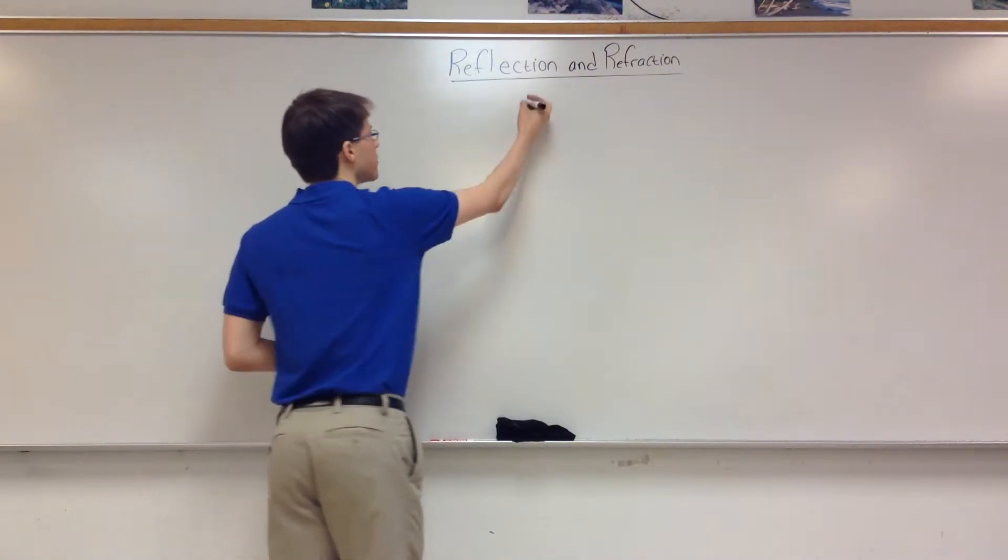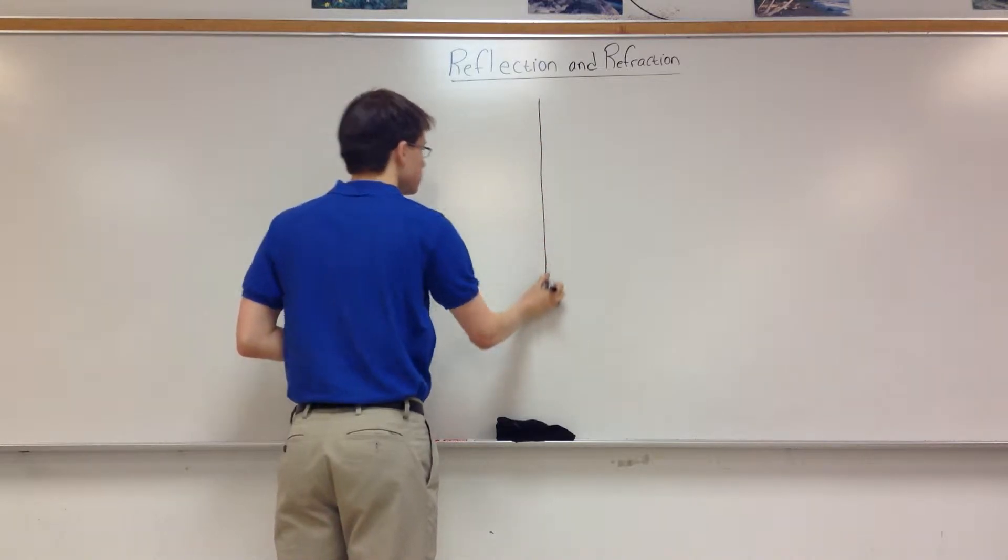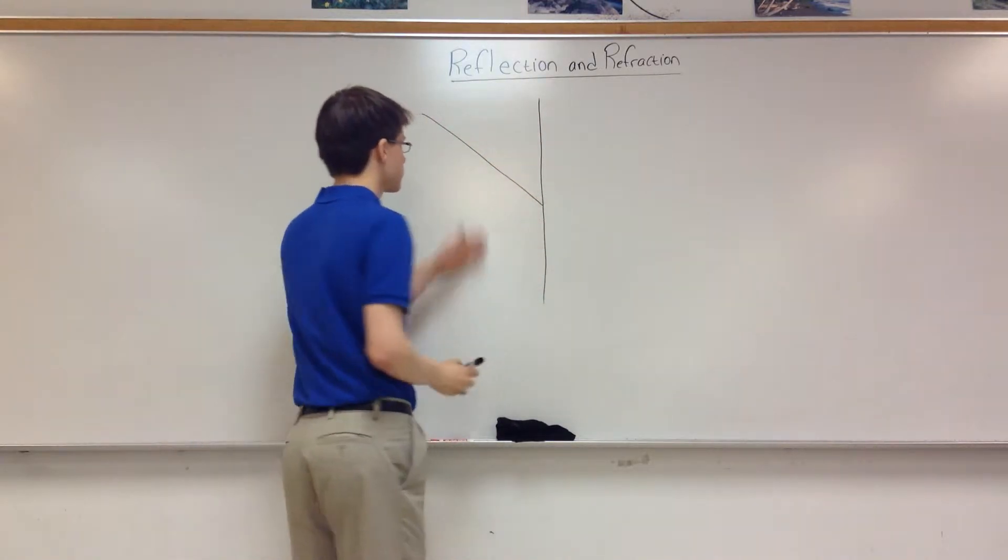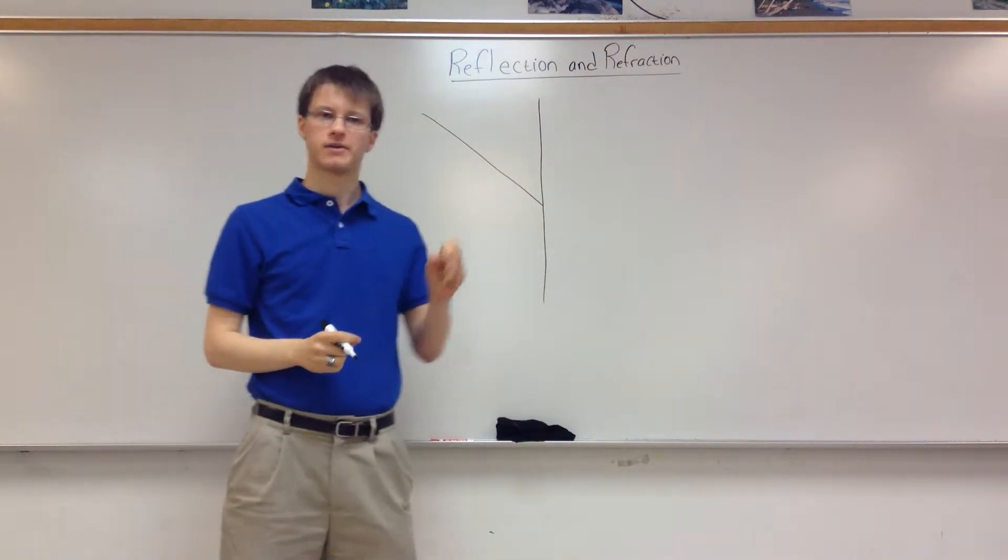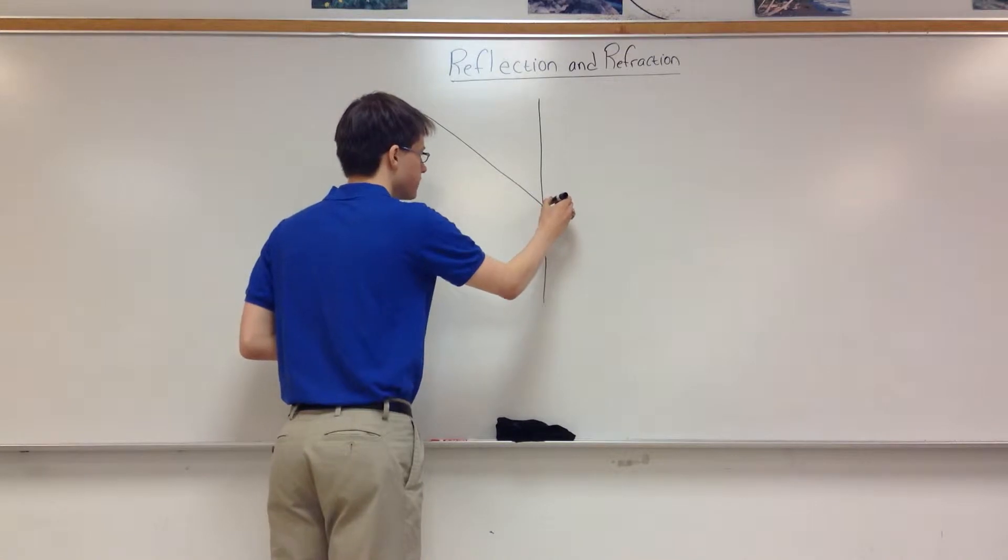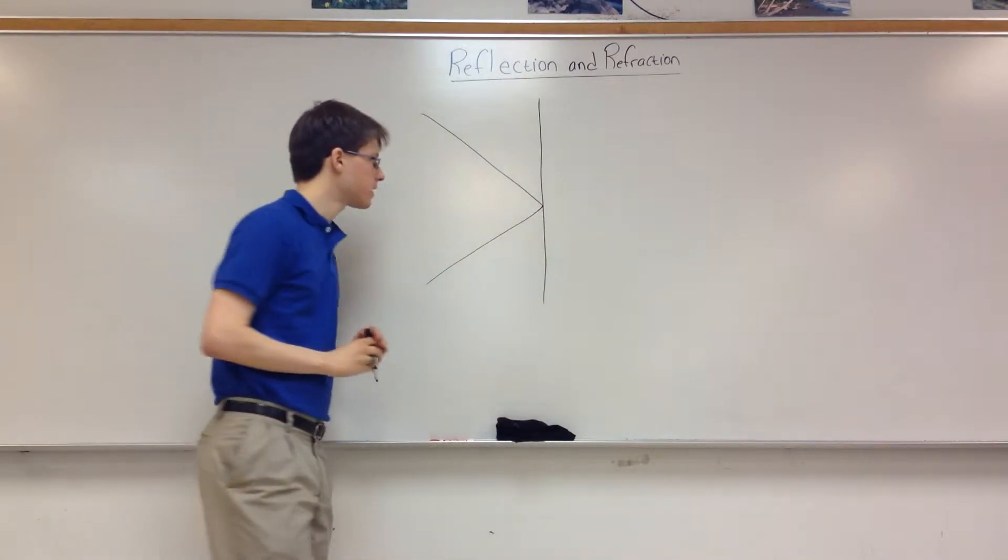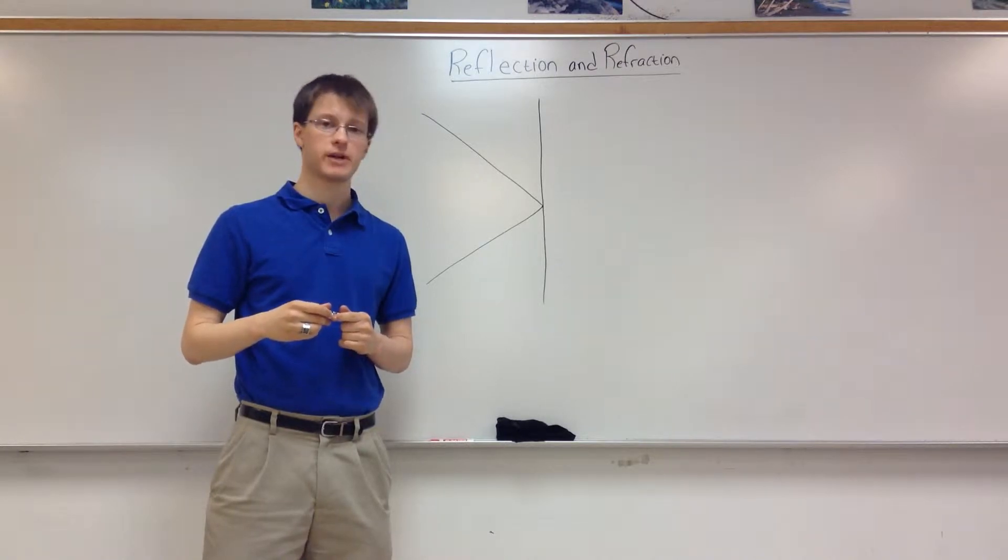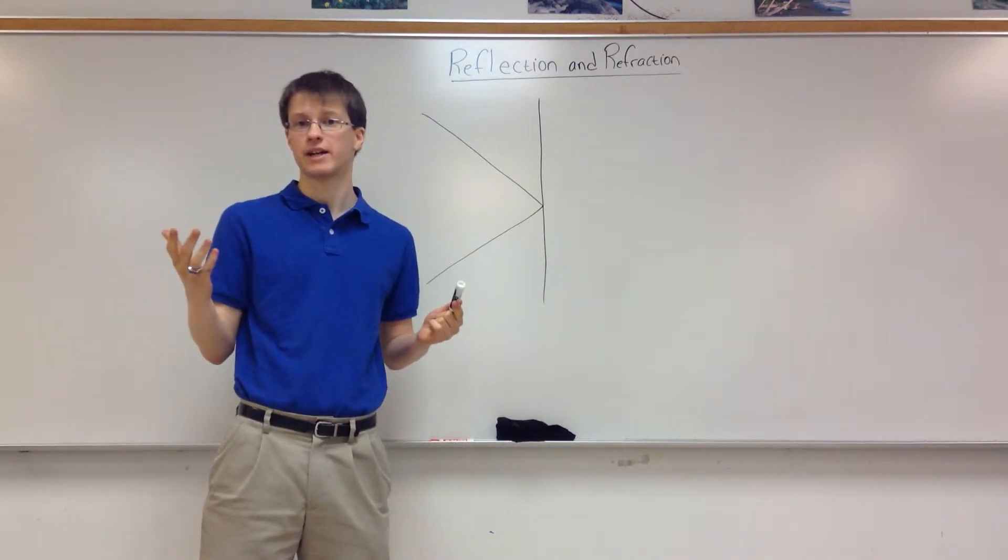So if I have a surface and I have light that comes in, we can say this is called a light ray. We just model it as kind of a beam of light, and it hits the surface, it's going to bounce off. And this isn't just for mirrors.